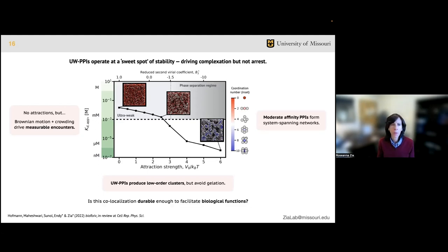In between these two limits, PPIs at the ultra-weak threshold drive measurable complexation but form small clusters rather than an arrested network. This is the sweet spot that's biologically relevant. The question is if these interactions last long enough to impact biological functions in vivo. And more broadly for this audience, are these bonds strong enough to create a viscosity that's going to be problematic in the flow of a material?